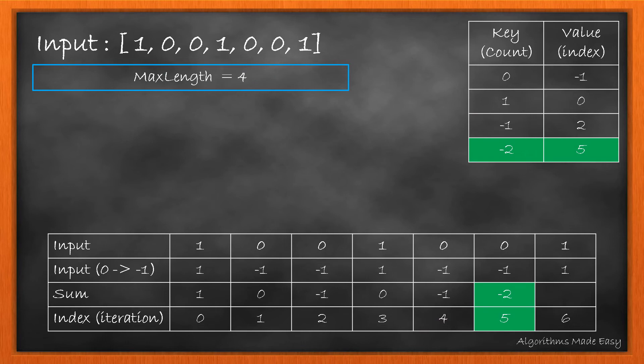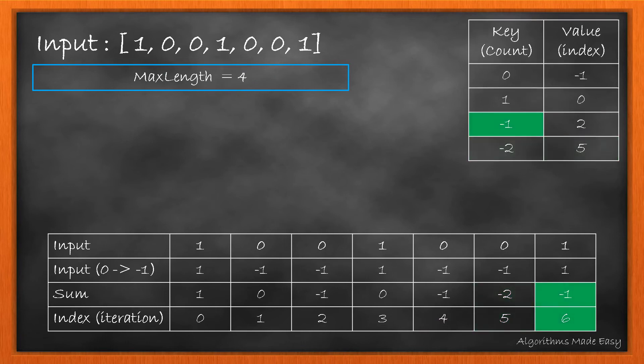Moving ahead, the sum is –1. We will once again calculate the max length. This time, it does not get updated.